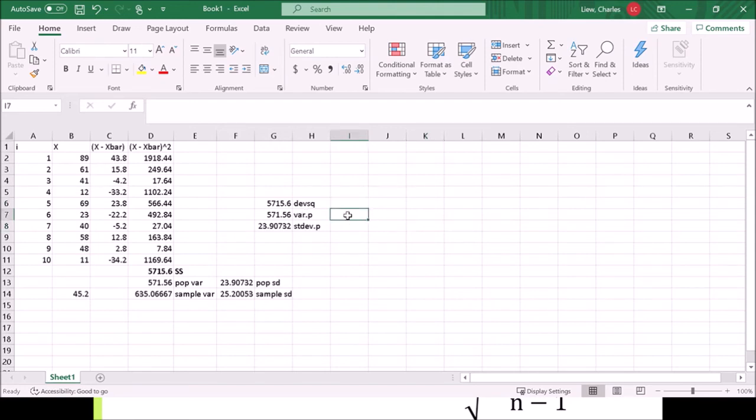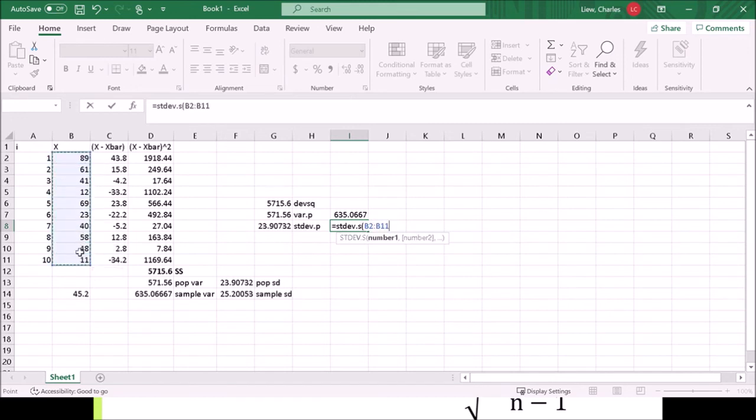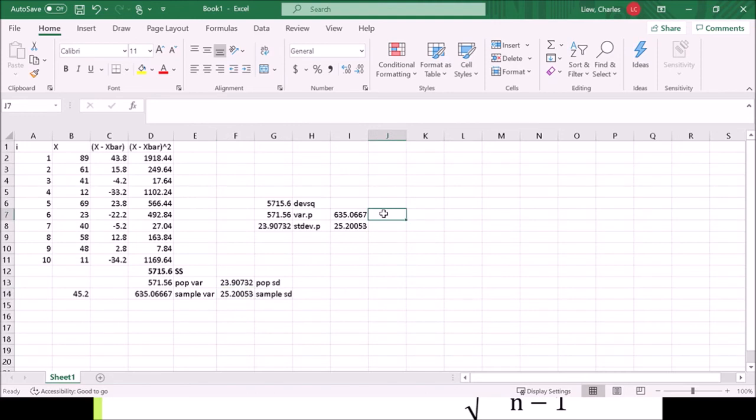You can also do the commands for variance with sample, with dot s. Notice how that matches here. And you can do the same thing with standard deviation. So there you go. That matches right here. So these are how we get all these values from a set of data. And you'll notice that really the lift is simply getting from the data to the sum of squares. And then these are pretty easy.